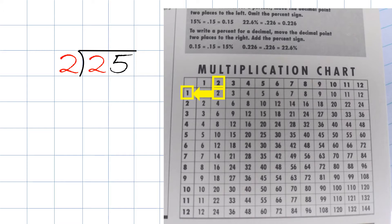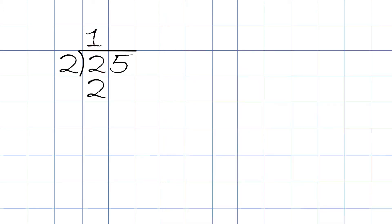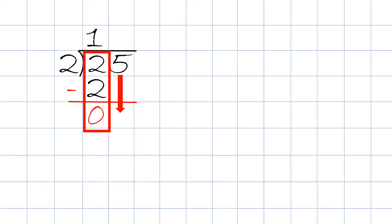We take the answer 1 and put it on top over the 2. Then we take 1 times 2 and the answer will be 2 — we write it right up here. We then take 2 minus 2 and the answer will be 0. Next, in the dividend 25, we bring down the 5 straight down.